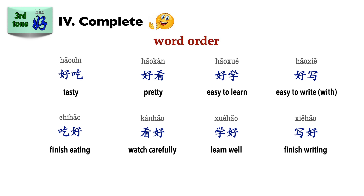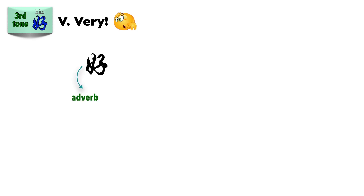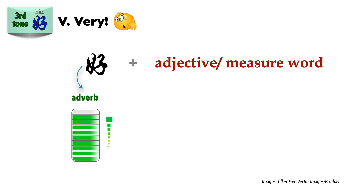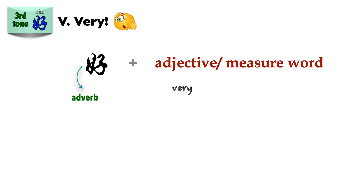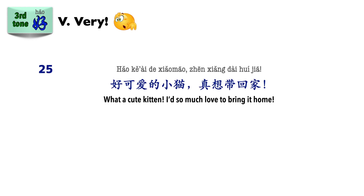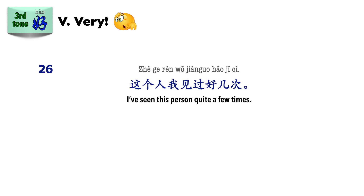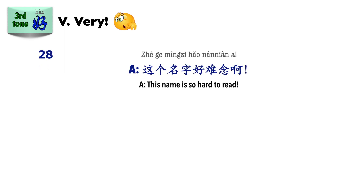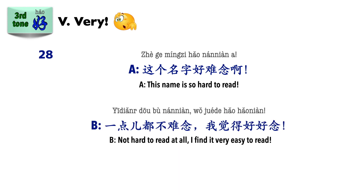Finally, the last meaning of third tone 好 we'll look at today: Very. This meaning of 好 is an adverb and comes before an adjective or a measure word to emphasize intensity. It is colloquial and emotive, often translated as very, so, quite, such, or what. Examples: 好久不见. 好可爱的小猫，真想带回家. 这个人我见过好几次. 你穿着衣服好好看啊. 这个名字好难念啊 — 一点都不难念，我觉得好好念.